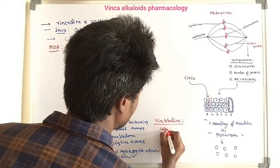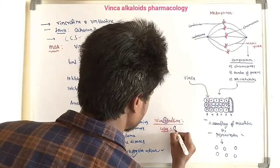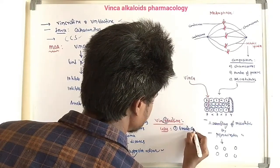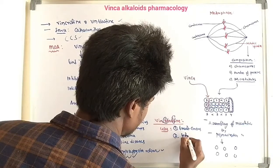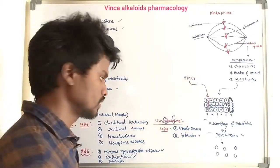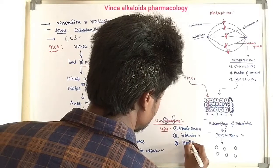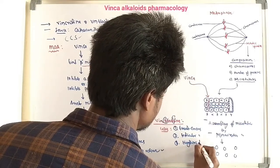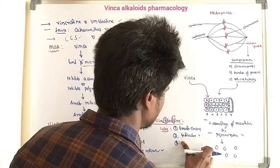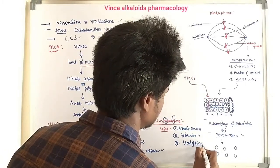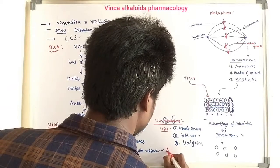The important uses of Vinblastine: 'B' stands for breast cancers — so the first use is in the treatment of breast cancer. 'T' stands for testicular cancers. It is also used in the treatment of Hodgkin's disease.